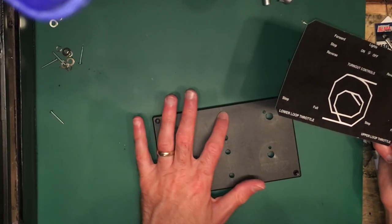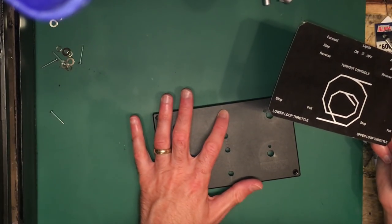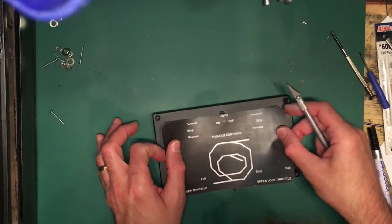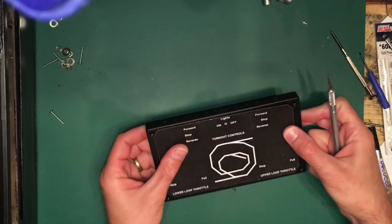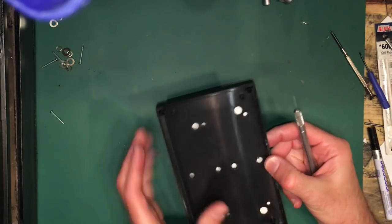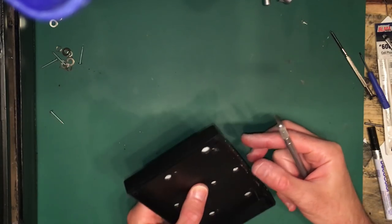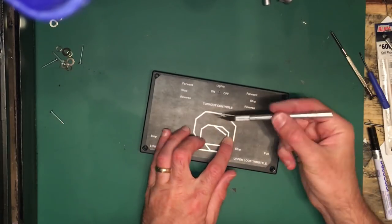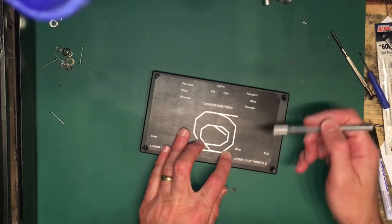I'm aligning everything initially by the location of this toggle. If I center that in the opening up here, everything else should line up exactly where I want it in terms of the holes coming through in the right places everywhere else.